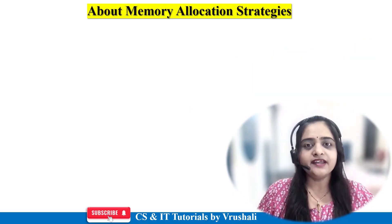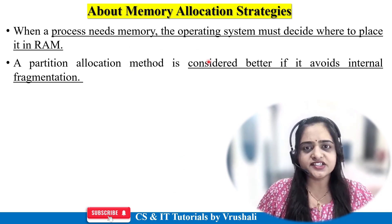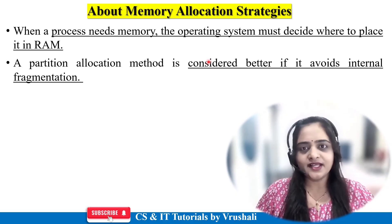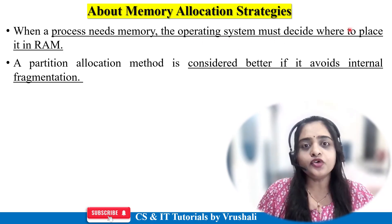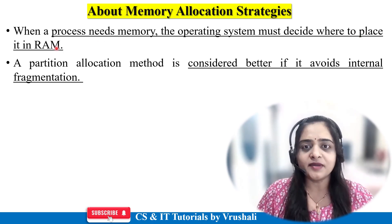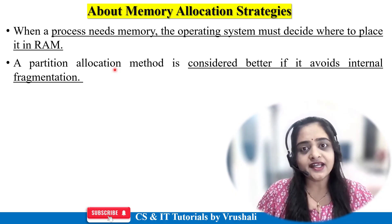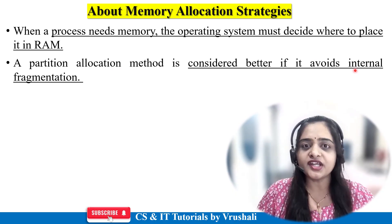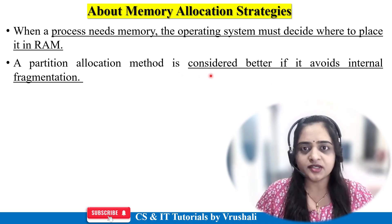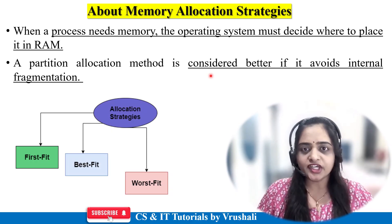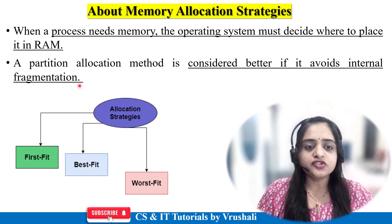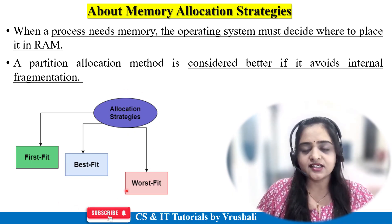The first question is: what exactly are memory allocation strategies? In an operating system there are multiple processes — like in your mobile there are multiple apps — and every process or app requires memory for execution. The operating system decides where to place a particular process in RAM. We discussed partition allocation methods like fixed and dynamic memory partition, and fragmentation errors. There are three memory allocation strategies: first fit, best fit, and worst fit, each with their own advantages and disadvantages depending on the requirement.